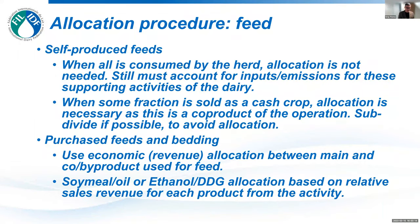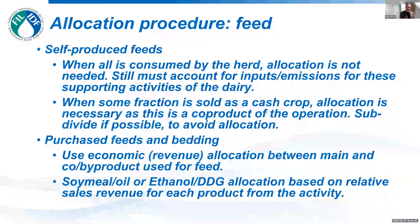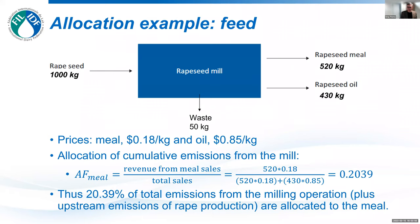If separation isn't possible, the idea would be to use a revenue-based approach to allocate some of the dairy operation emissions to the sold feed. On the incoming side for purchased feed, the IDF guidelines recommend using an economic or revenue-based allocation between the main and co-product. A common example is a meal and oil separation, or distiller's grains coming from ethanol production, where allocation is based on relative revenue from ethanol versus distiller's grain sales.